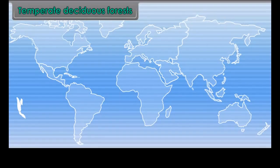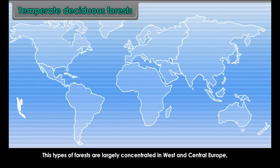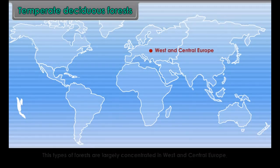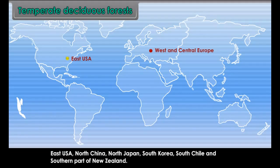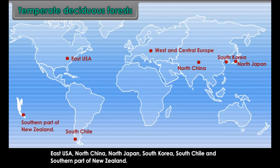Temperate Deciduous Forests. This type of forest is largely concentrated in West and Central Europe, East USA, North China, North Japan, South Korea, South Chile and the southern part of New Zealand.